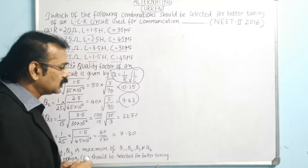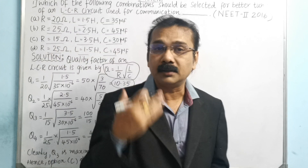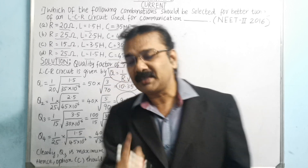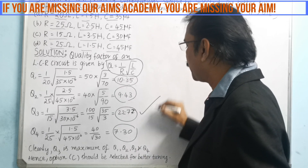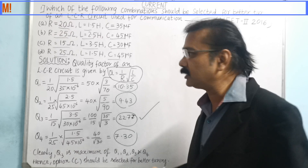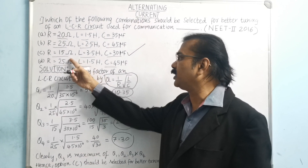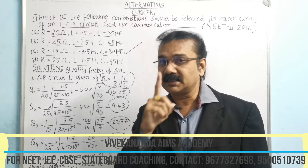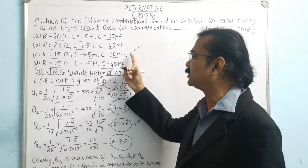With the formula method we got all four answers. Now we have to see which is the biggest number. For a better quality factor and better communication, the quality factor should be the highest. The highest value is 22.77, so the option is C — where R = 15 ohms, L = 3.5 H, and C = 13 μF. So our answer is option C.